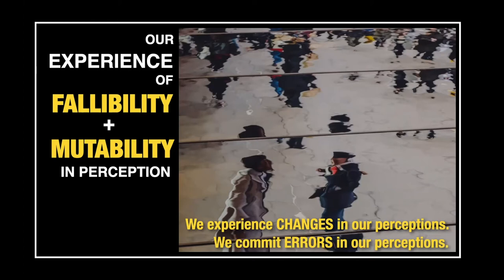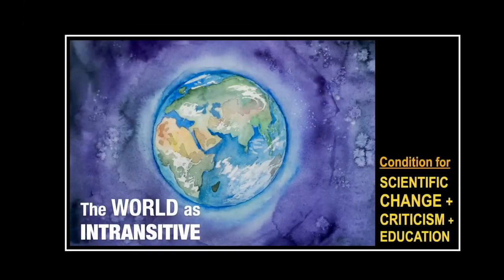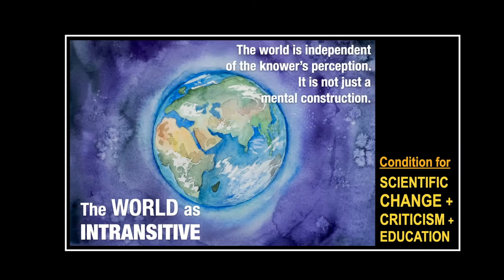According to Roy, our experience of fallibility and mutability tells us something about the world. The term he uses is that the world is intransitive. Intransitive is a grammar term meaning a verb without a direct object, but he appropriates the word and adds new meaning to it — he didn't want to use 'objective' because of the philosophical baggage. Basically, if you want a simple explanation, it means the world is objective, and it is independent of the knower's perception — it is not just a mental construction.